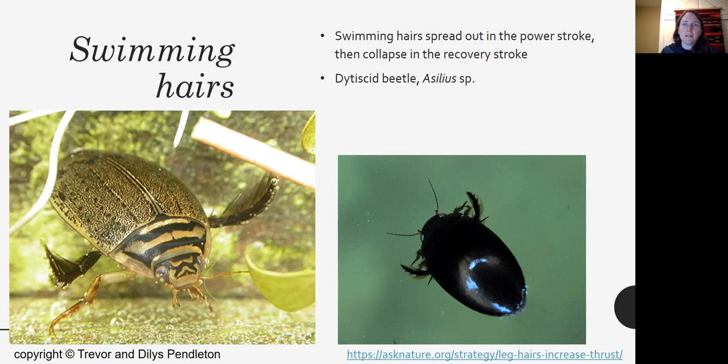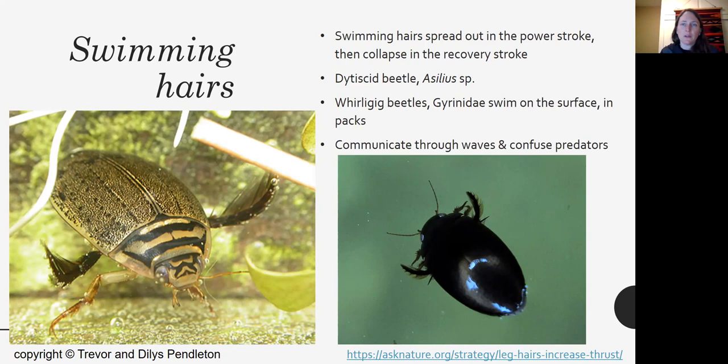So here we see a dytiscid beetle, a cilus. You can see those great hairs on the legs. And then you can also see a whirligig beetle, gyrinidae. And the gyrinidae, so the dytiscid beetles swim through the water column. The gyrinidae swim on the surface. And the gyrinidae can swim in packs. And they can even communicate through the waves that they create. And by swimming in these whirling packs, they confuse the predators.